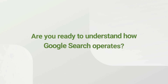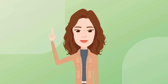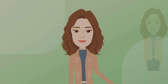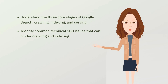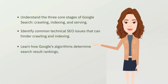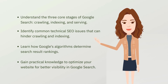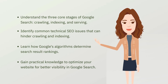Are you ready to understand how Google Search operates? In this training, we'll walk you through the automated process of Google Search, detailing how it crawls, indexes, and serves web content. By the end of this training, you will understand the three core stages of Google Search — crawling, indexing, and serving. You will identify common technical SEO issues that can hinder crawling and indexing, and learn how Google's algorithms determine search result rankings. Lastly, you will gain practical knowledge to optimize your website for better visibility in Google Search.